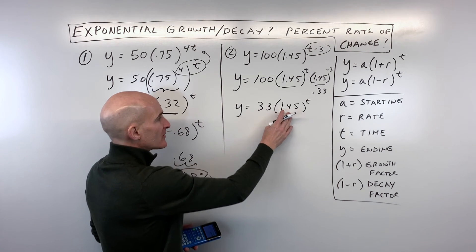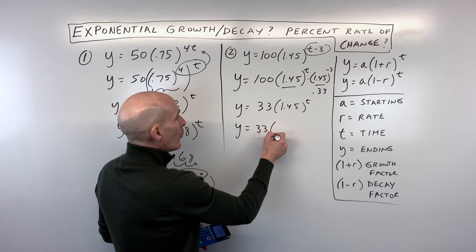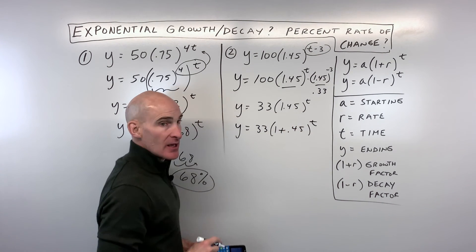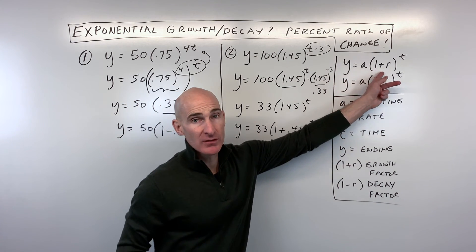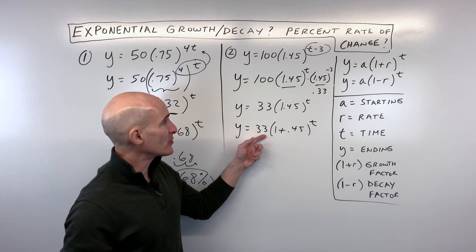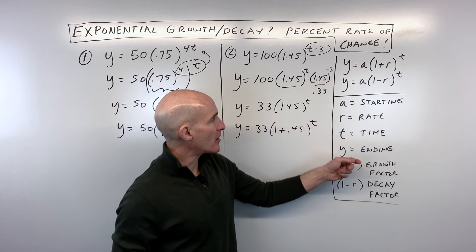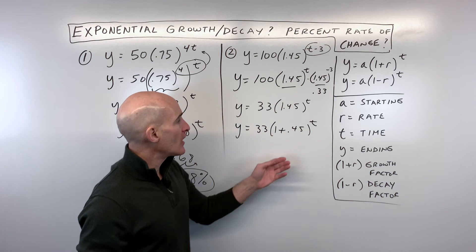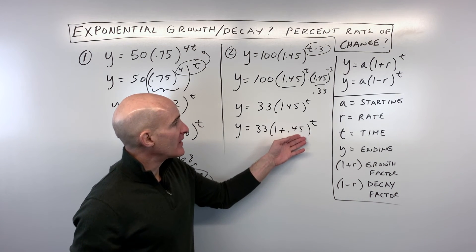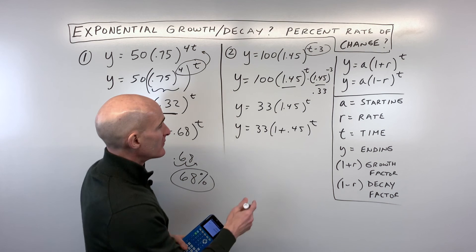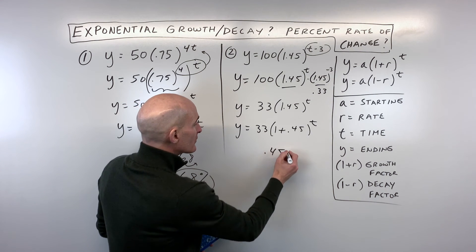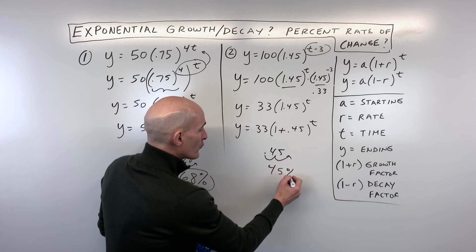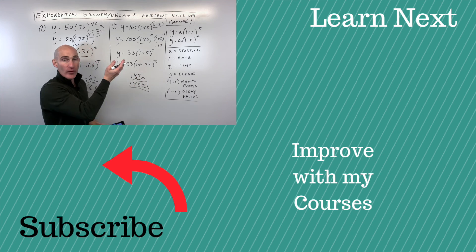Now when you look at this, we can rewrite this further as 1 plus 0.45 to the t. And now it looks very much like this first exponential function. 33 is our a value, that's going to be our starting amount or our initial amount. The 1 represents 100% like we talked about. And the 0.45, that's going to be our rate, in this case our rate of increase, but let's go ahead and convert that to a percentage by moving the decimal two places to the right. So that's actually a 45% rate of increase.